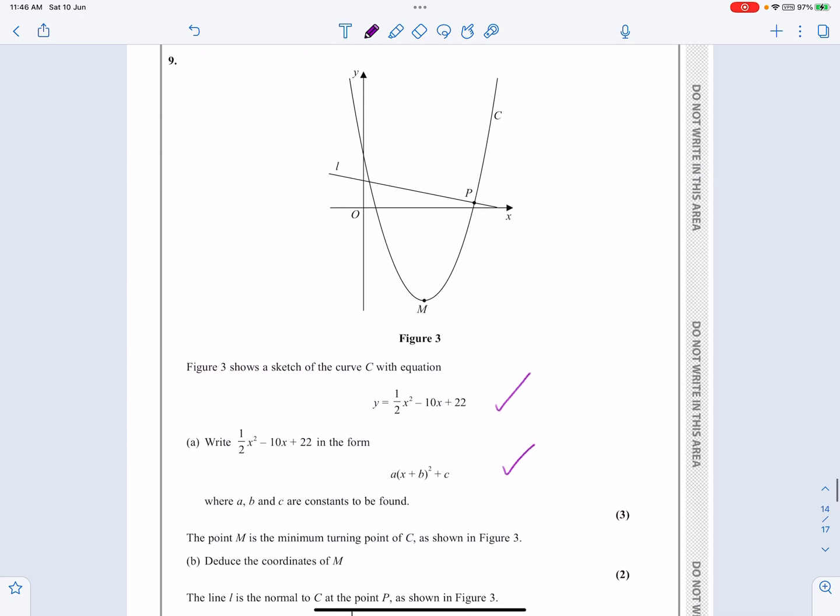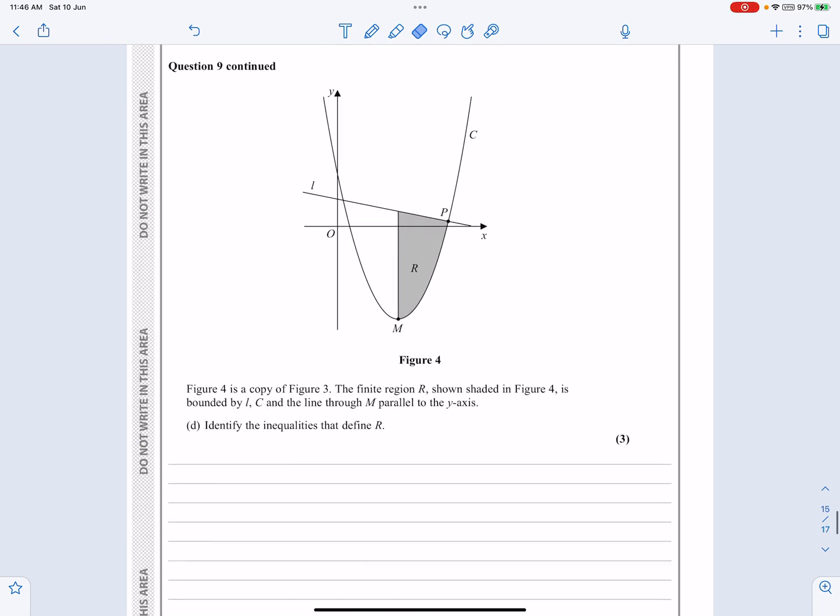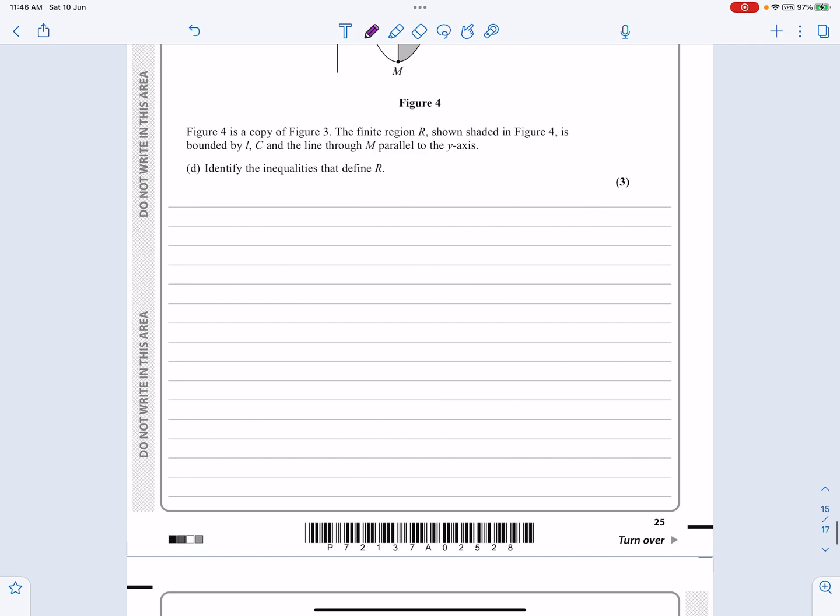Let's just focus on the first part, which says, can we take y equals half x squared minus 10x plus 22 and put it in the form a(x plus b) squared plus c, which in other words means completing the square. So let's get started with that.